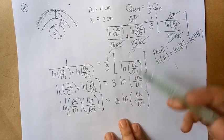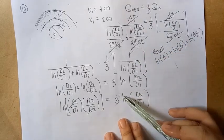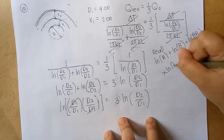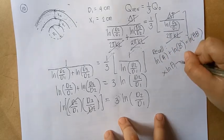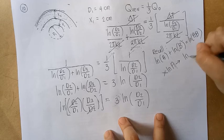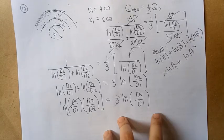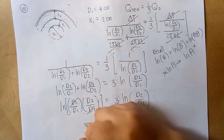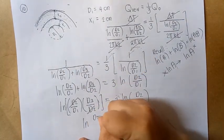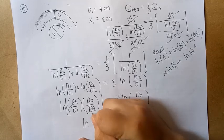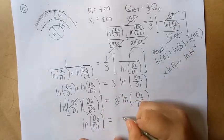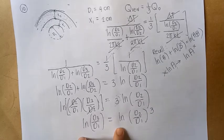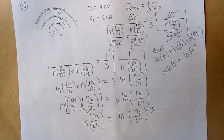The D2 cancels, giving ln(D3/D1) equals 3 ln(D2/D1). This also has a property - when X is in front, X ln(A), we can write it as ln(A raised to X). So we'll do the same here. Simplifying again: ln(D3/D1) equals ln[(D2/D1) raised to 3].